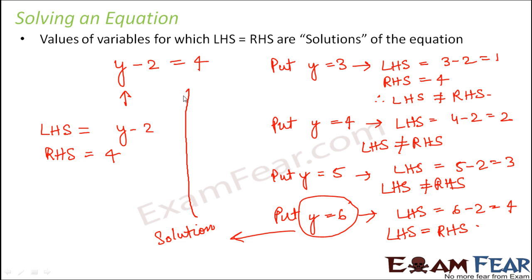This is a solution for this particular equation. y is a variable and will take different values in different equations, but for this particular equation y minus 2 equals 4, y equal to 6 is a solution — because if you put y as 6, the left hand side equals the right hand side. This is what we understand by the solution of an equation.